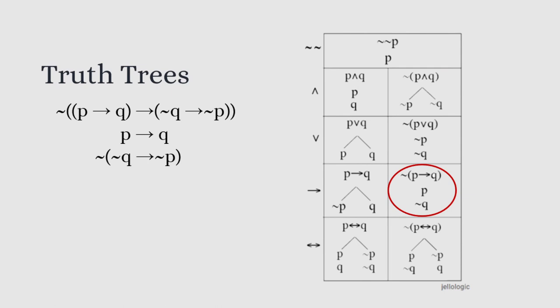Now we see that our statement takes the form of negated implication, so we find the appropriate rule and apply it. Here P implies Q is the first term in our negated implication, and Q implies P plays the role of the second.